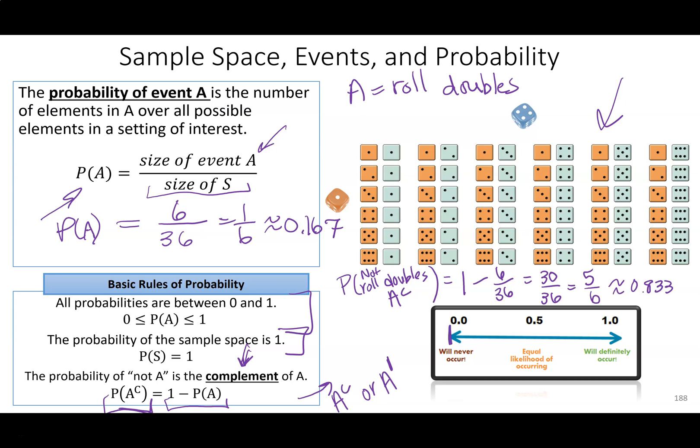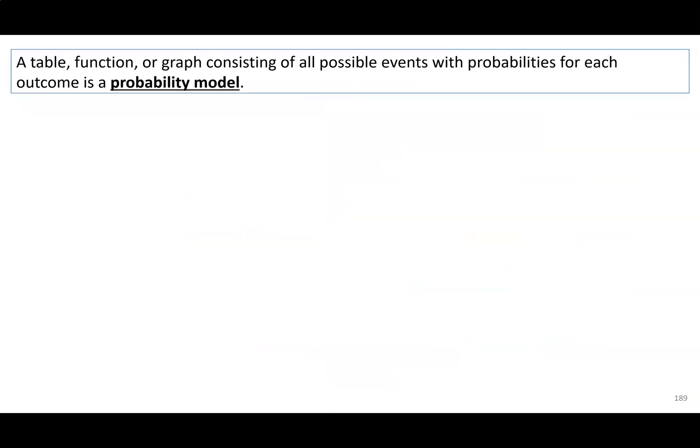Absolutely can't go below zero, can't go above one. If you have a probability of 0.5 — I like to include the leading zero — it means there's a 50% chance; it's equally likely to go either way. One thing we really like to do in statistics is list all possible events and the probabilities associated with each event. When we put this together in a table or graph, it's called a probability model.